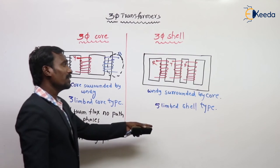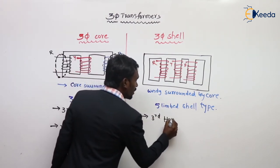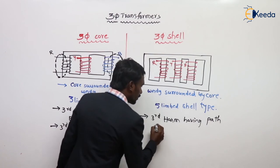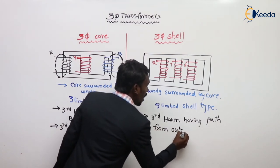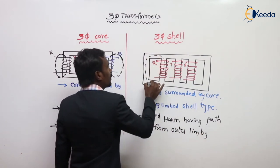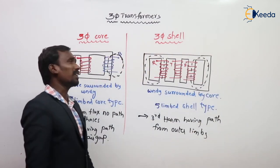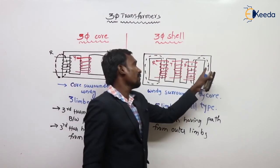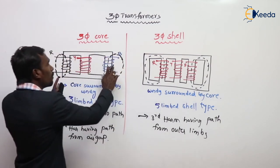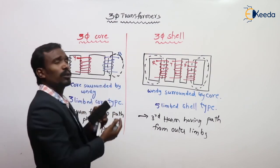But in the shell type transformer, the third harmonics have a path from the outer limbs. The third harmonics flow through the outer limbs, so there is no need to take the air gap path. In core type there is no closed path between phases, that's why it chooses the air gap.